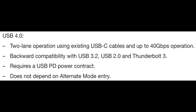In USB 3 there are four cables for data transfer, but in USB 4 only two lanes are used, each containing 20 Gbps speed — giving 40 Gbps total. USB 4 has backward compatibility with USB 3.2, USB 2, and Thunderbolt 3 — it contains all those things. It requires a USB PD power contract and does not depend on alternate mode entry.